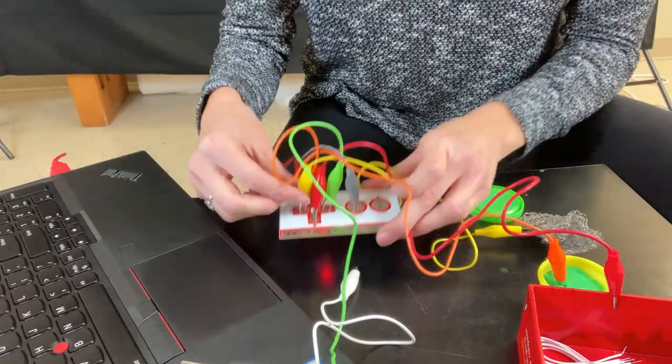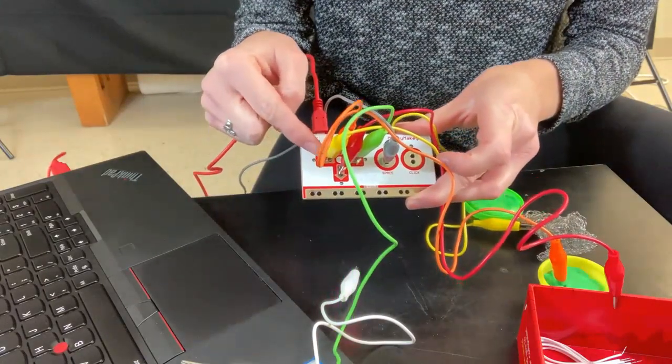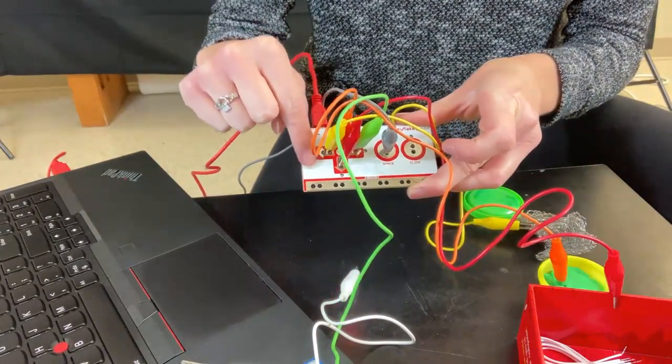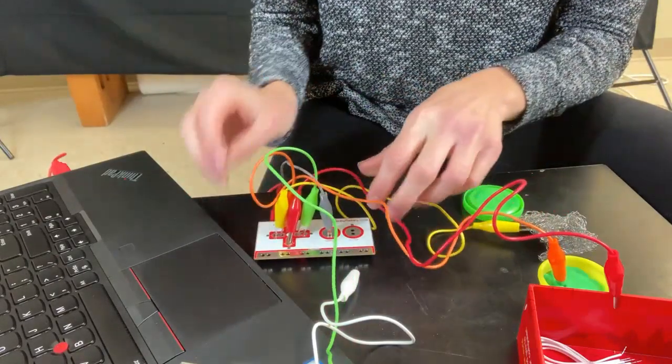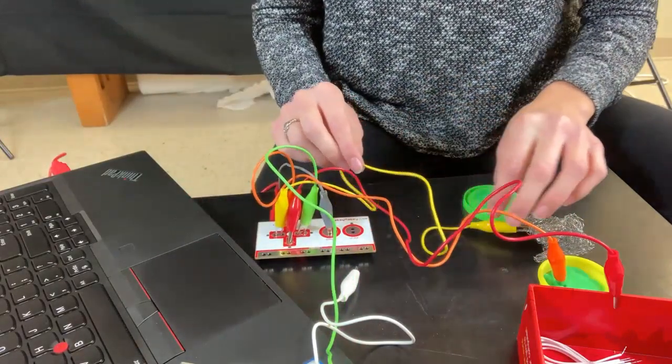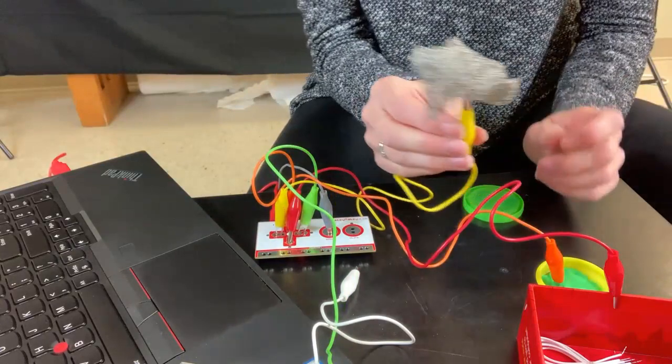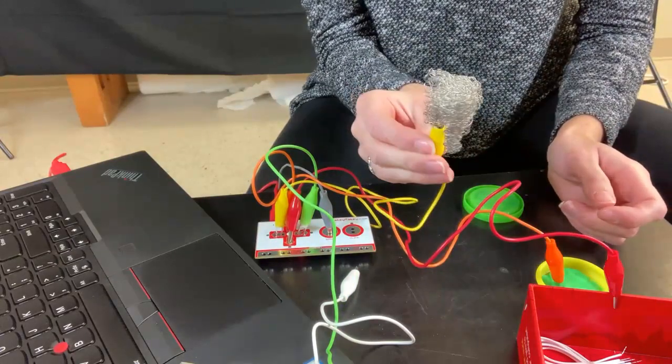The yellow one, I've attached one end to the left key on the controller. And again, let's follow the yellow cord. I've attached the other end to a wire kitchen sponge.